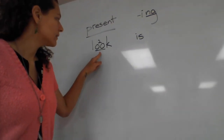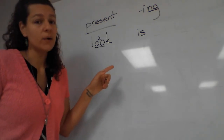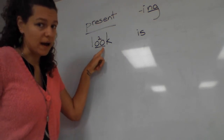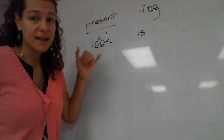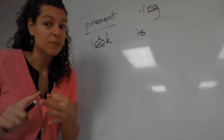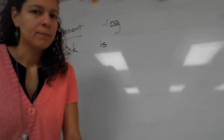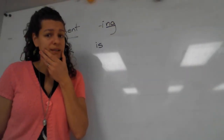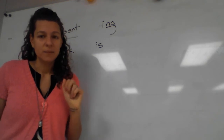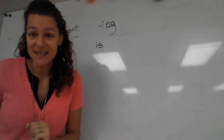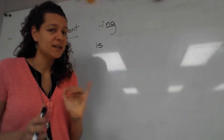Now, does look have a silent final e at the end? It doesn't. And I know it's not a one-one-one word because it doesn't end with one vowel — it has two vowels there. So this is not a one-one-one word and not a silent final e word. That means it's a do-nothing word. All we need to do is stick that vowel suffix on the end. Is -ing going to get its own syllable? Put your hand on your chin and say looking. Yes — -ing always, always, always gets its own syllable. So is looking is our present and continuing form of that verb.